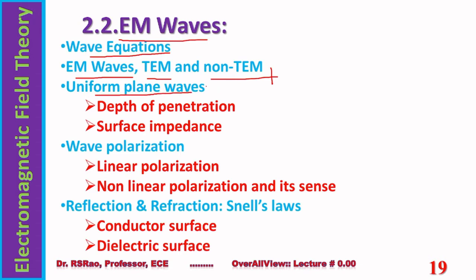Then we move to uniform plane waves. Uniform plane waves have special significance because we come across them frequently in wireless communication systems. In wireless communications, the transmitting antenna and receiving antenna are usually separated by large distances. Whatever the type of wave at the transmitting antenna, by the time it reaches the receiving antenna it becomes a uniform plane wave. So at the receiving antenna in a wireless communication system, most of the time it is a uniform plane wave — roughly half the time. The concept of uniform plane waves is introduced along with properties and two quantities: depth of penetration and surface impedance.